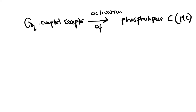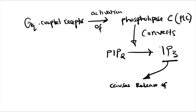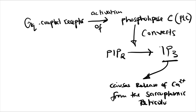IP3 acts as a secondary messenger in the cell. This secondary messenger goes and binds to what we call the IP3-sensitive calcium receptor on the sarcoplasmic reticulum, which causes release of calcium from the sarcoplasmic reticulum (SR).